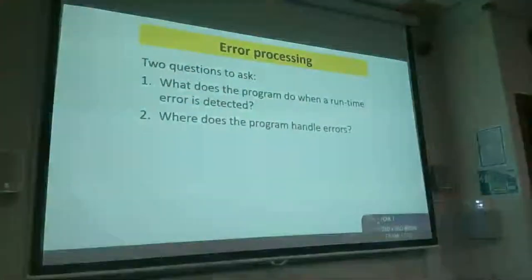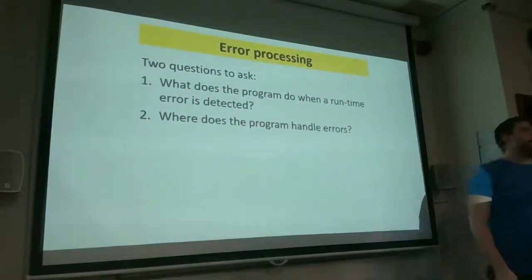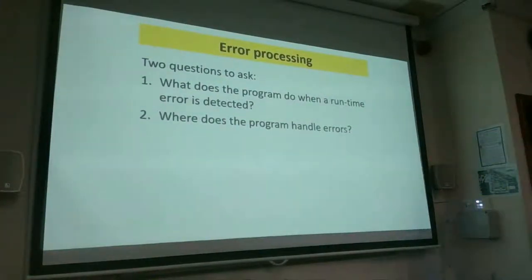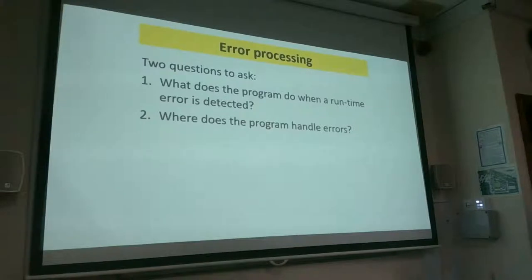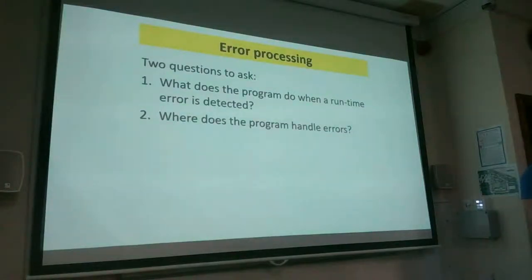When a runtime error occurs, it crashes the program. Where the program handles the error depends on where it occurs. If the error is inside main it tries there immediately. If it's in another method, it tries that method first, then works back up through whichever methods called it, all the way to main. If none of those methods have a facility for handling that error, it crashes the program.